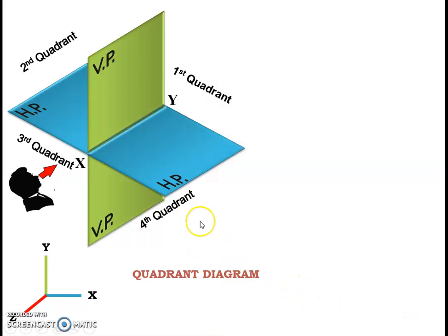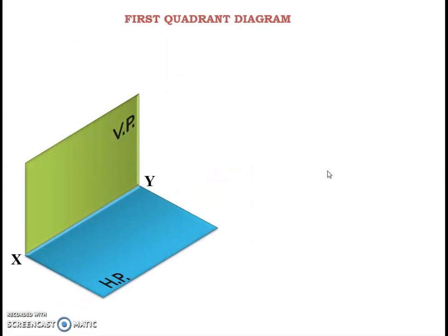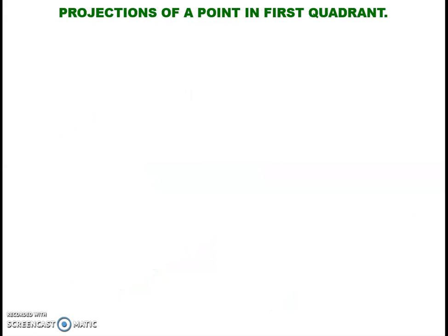Here you can see the 3D representation of the quadrant diagram. The same thing can be represented in 2D like this. Here you can see the first quadrant diagram in 3D. 2D representation of the first quadrant diagram on the right hand side.